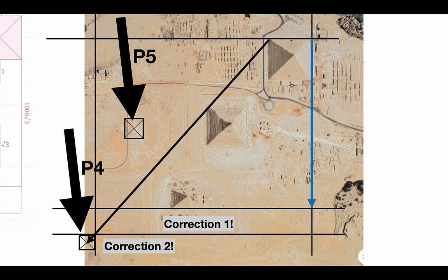Before we look at P5, let's be reminded about the sacred geometry of the unified plan of Giza. Ian Douglas largely gets this part from John Legon — the great sacred geometry. From the north of Khufu to the south of Menkaure is a thousand times the square root of three. In this unified plan, we expect these amazing numbers — a thousand times root three.